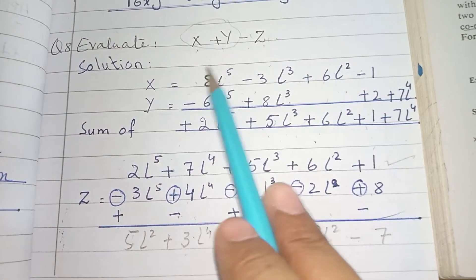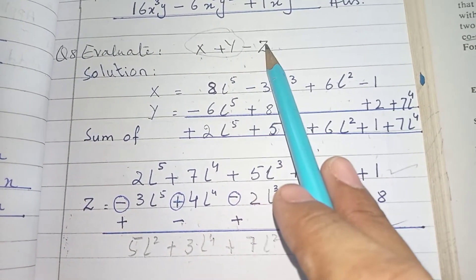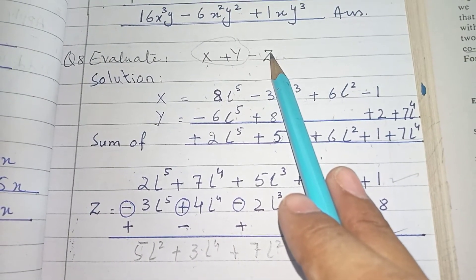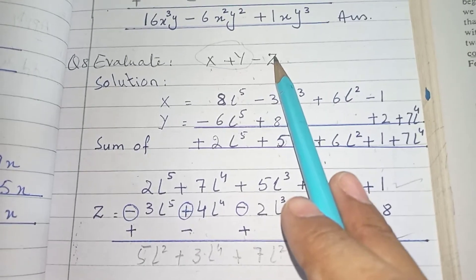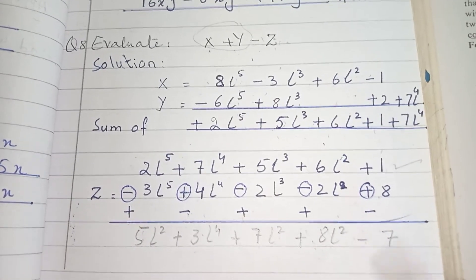First you add them, X plus Y. After add, subtract the value of or expression of Z. This one. Add them, then subtract them. Thank you.